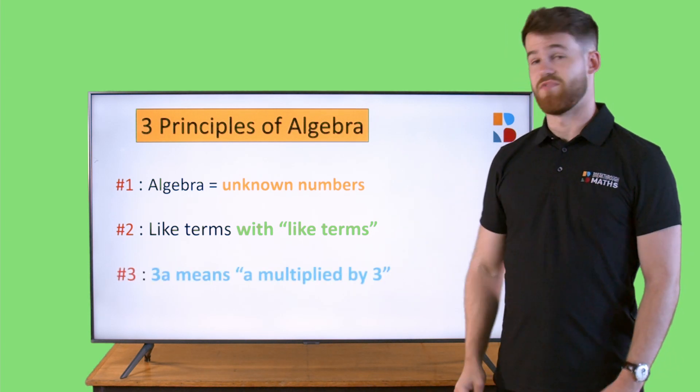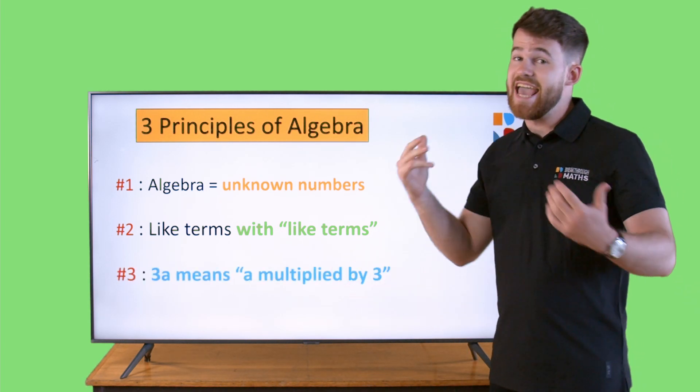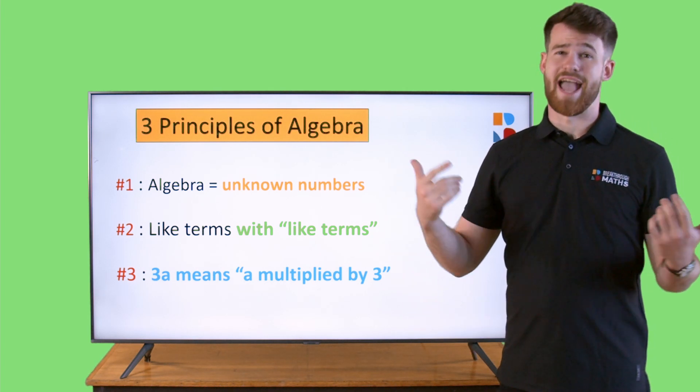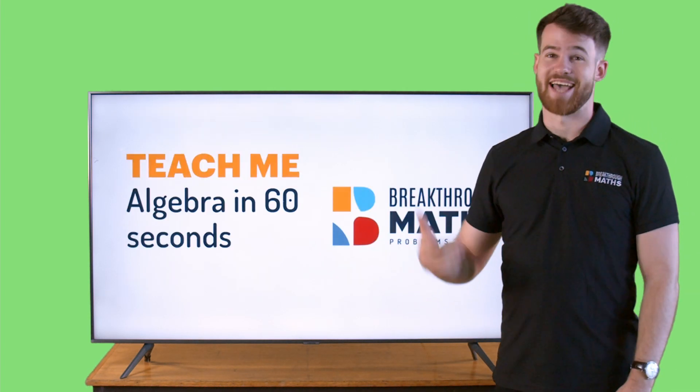Number three, 3a means a multiplied by 3. It's the exact same thing as saying three apples. And that is algebra done.